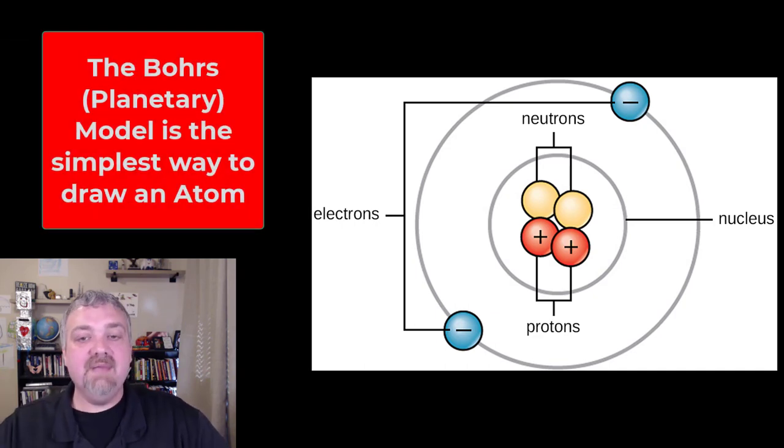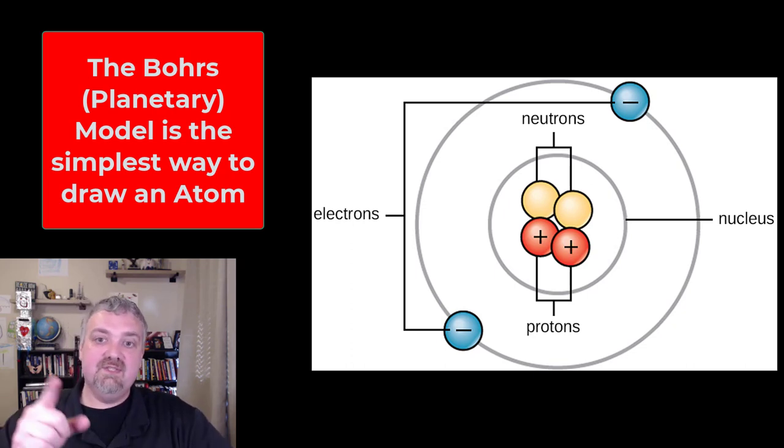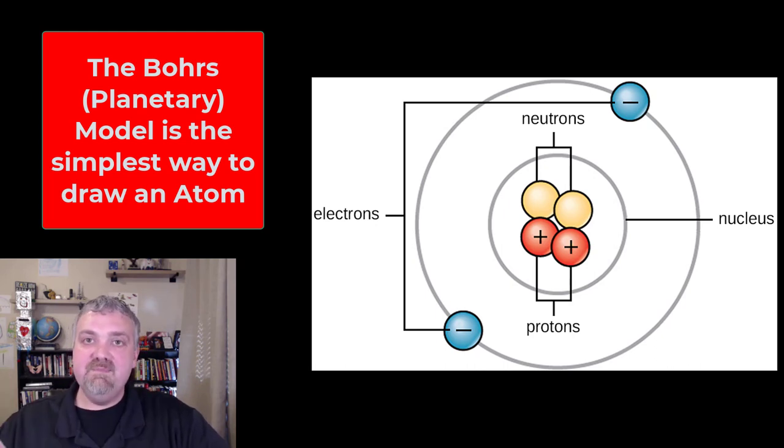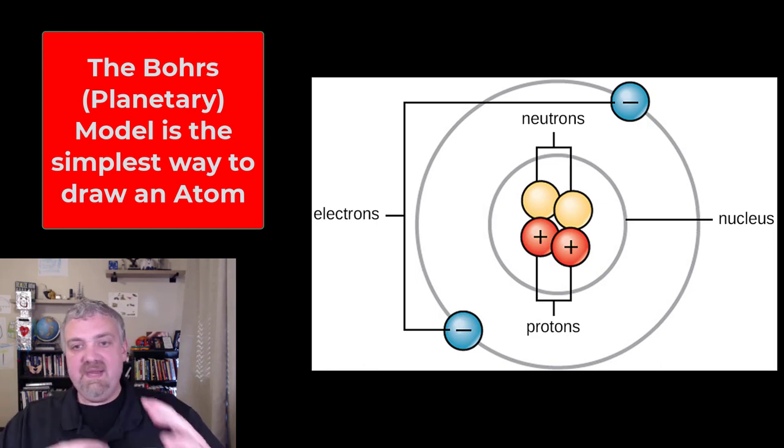We are looking at what's called the planetary model. I usually call this the Bohr's model, where you see the protons and neutrons in the nucleus and the electrons whirring around the outside. But they don't follow this beautiful path. They're not like rings around the outside of a planet.